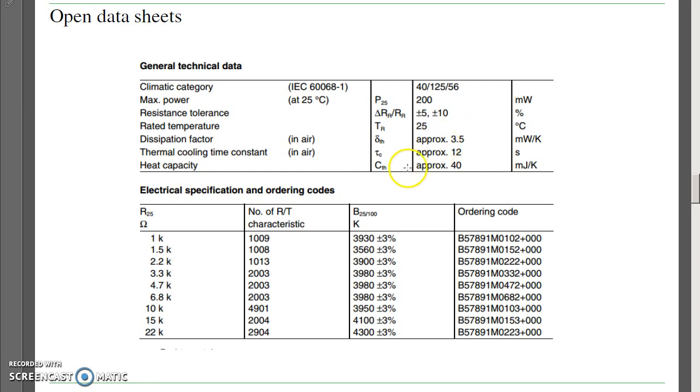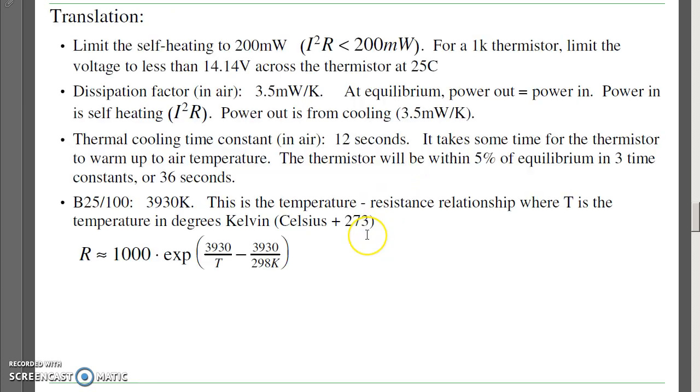The one we're looking for is this guy, the 3930. What that tells you is that the temperature-resistance relationship is this. This is the 3930. It's 1,000 ohms at 25 Celsius, which is 298 Kelvin. And thermistors have an exponential relationship between temperature and resistance. So with this, I can now mathematically model the thermistor.